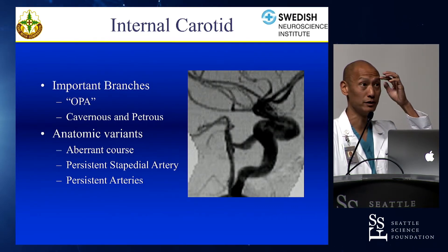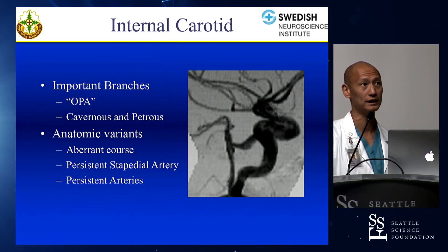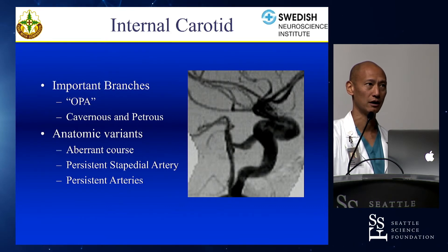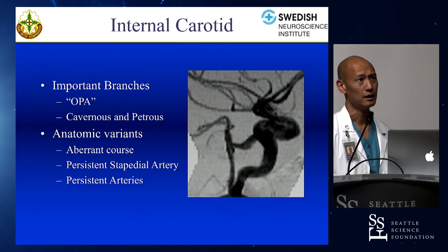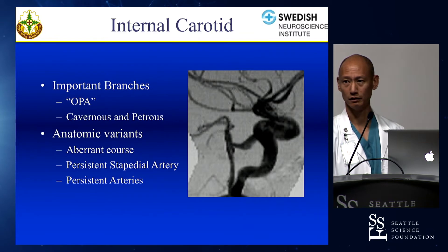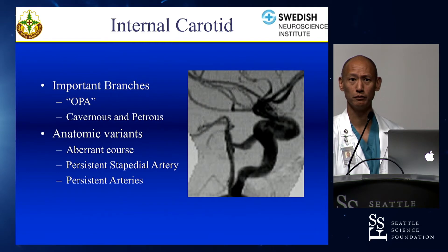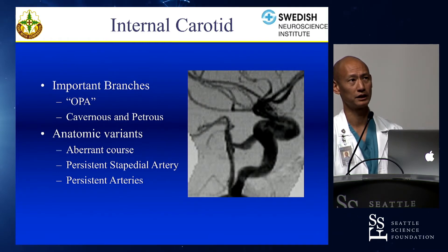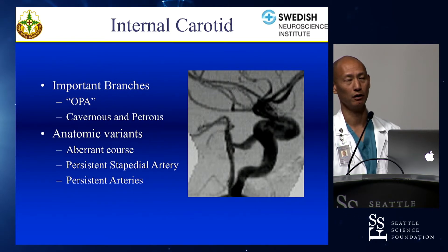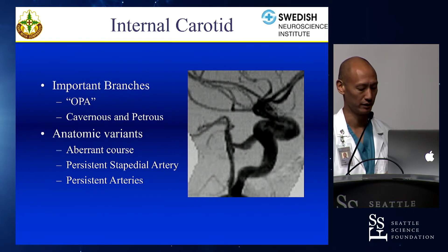The persistent trigeminal artery (PTA) is important to know about — obviously for WADA tests and embolizations, you need to be aware of that anterior-to-posterior collateral connection. The PTA can vary in how it connects: it can connect to just a single branch of the posterior circulation, like the AICA coming from the PTA, or it can have complete connections to the entire vertebrobasilar system. I've also seen PTAs give rise to the posterior cerebral artery. So in all intents and purposes it looks like a posterior communicating, but its origin is from the posterior genu.